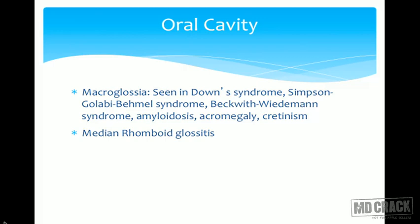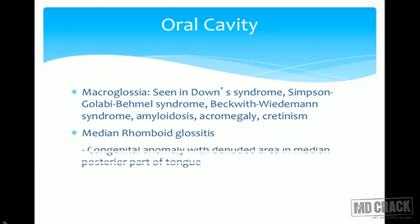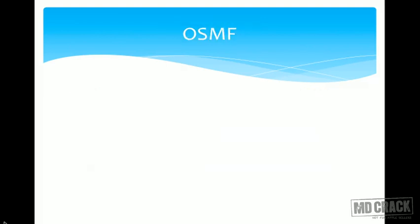Median rhomboid glossitis is a congenital anomaly with a denuded area in the median posterior part of the tongue. It may be associated with candidiasis.